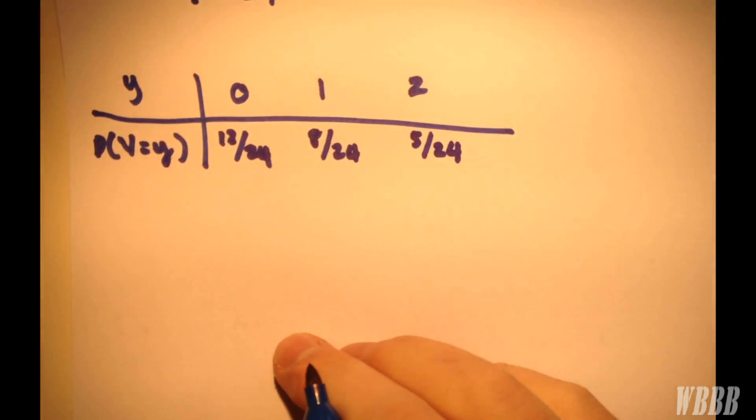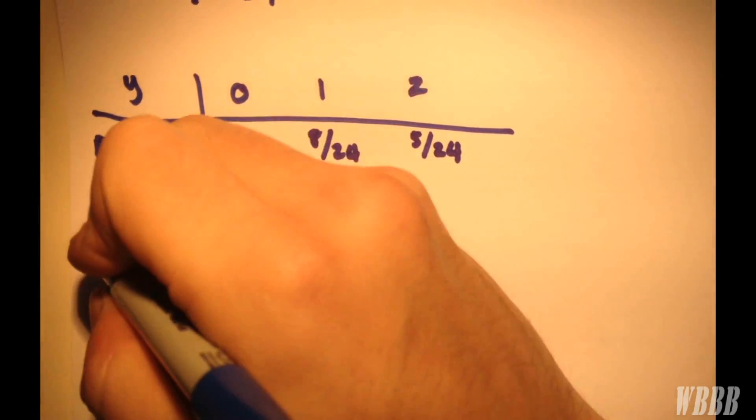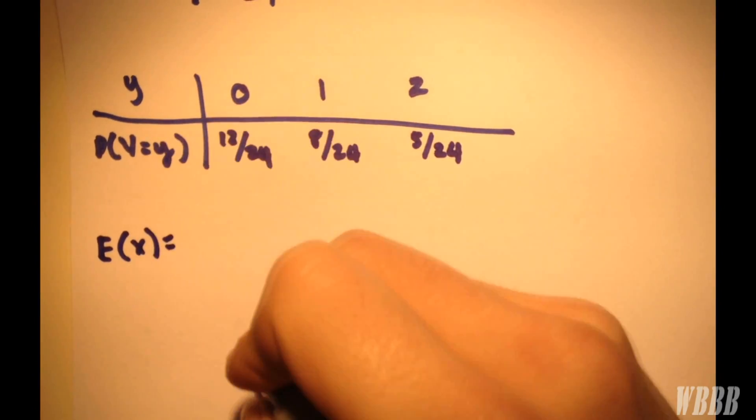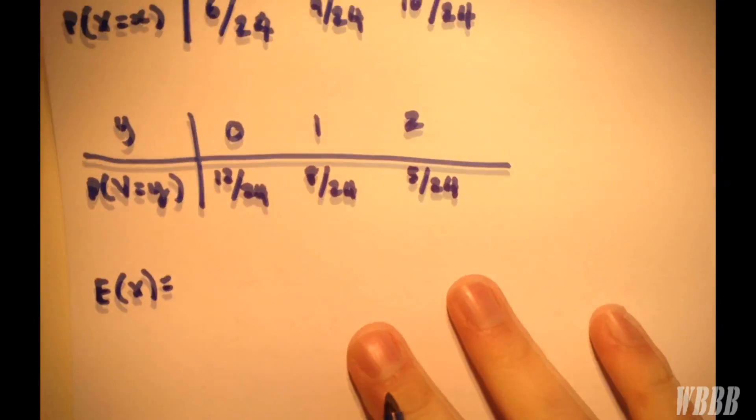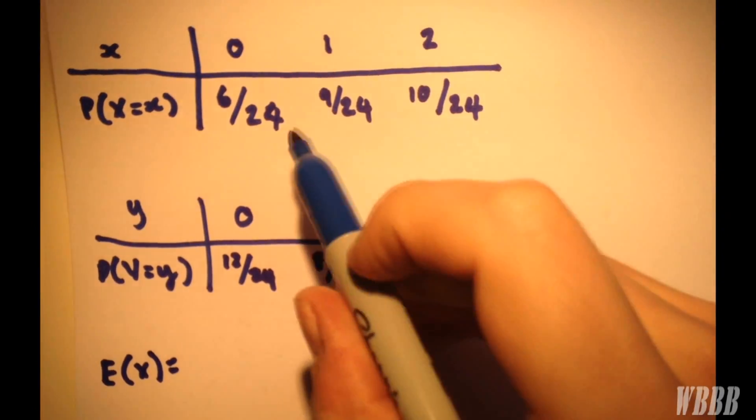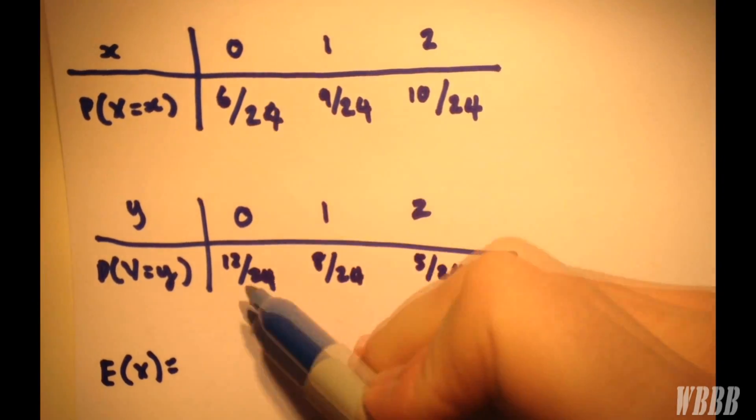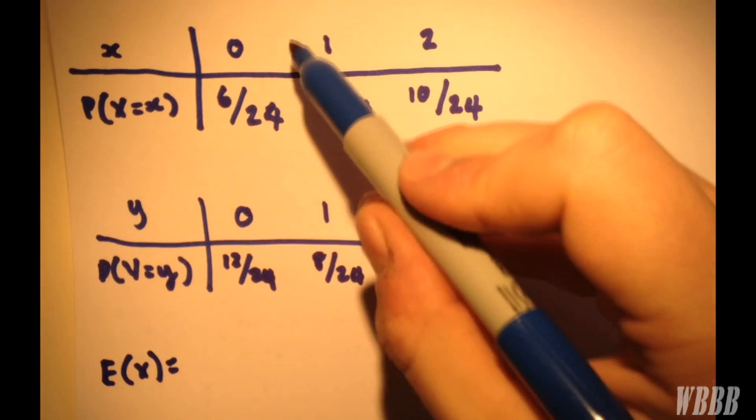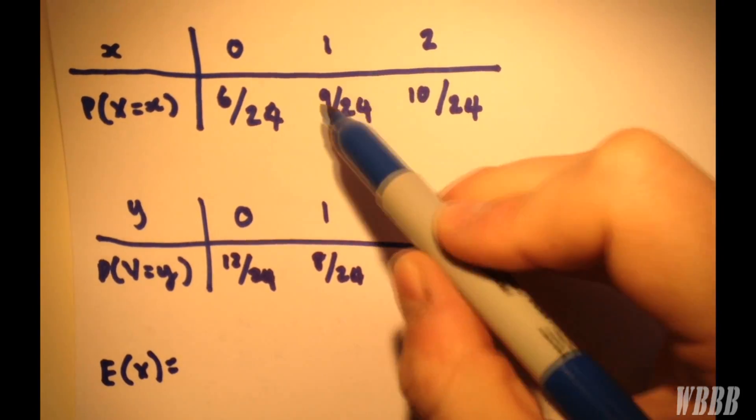Now, how to find the expected values, E(x) and E(y)? Well, same as we normally do in this situation. We look at our marginal probability distribution table here. And to find the expected value of x, we have 0 times this value, plus 1 times this value, plus 2 times this value.